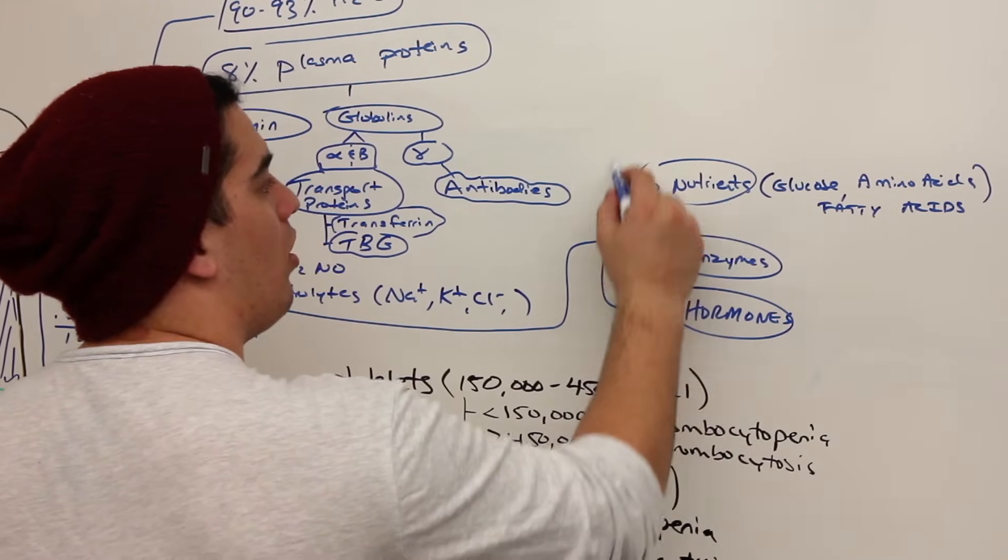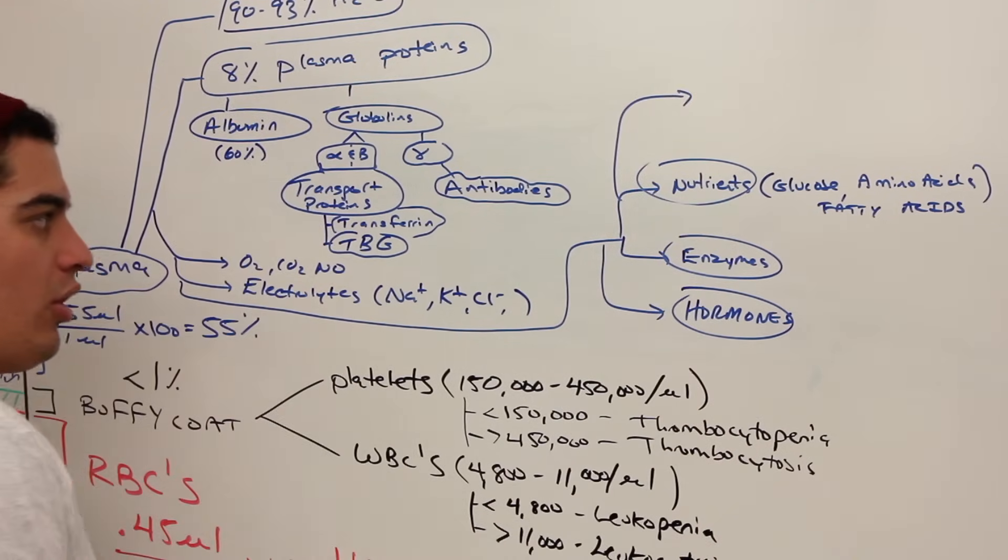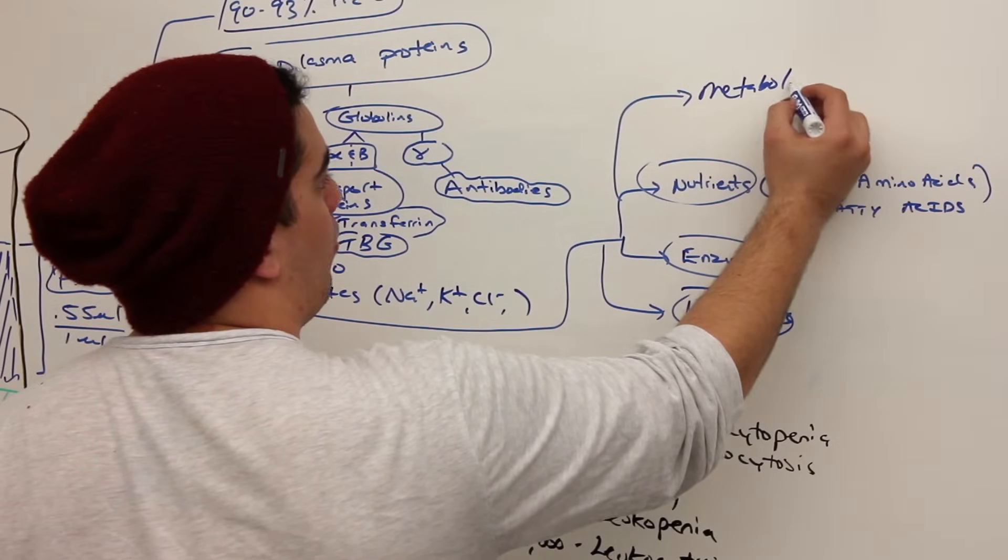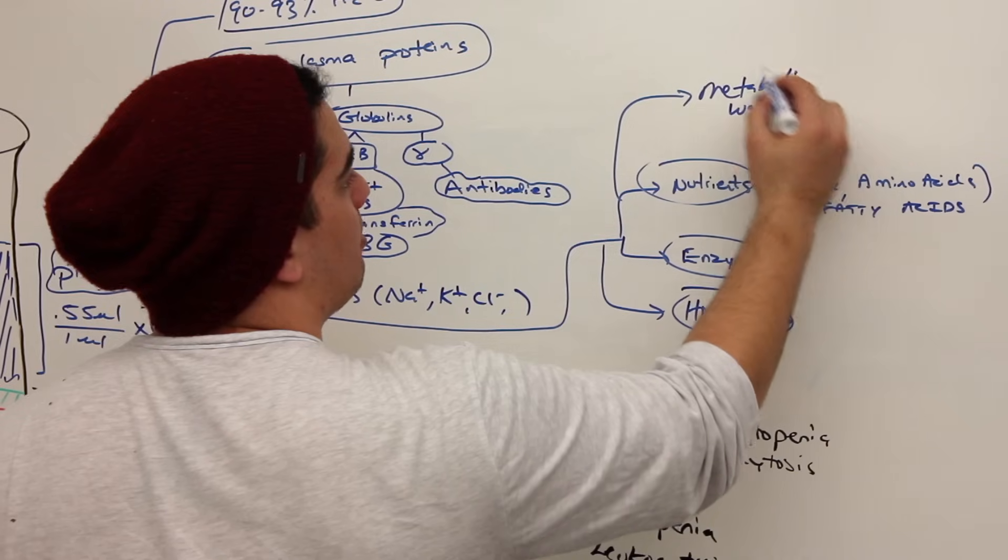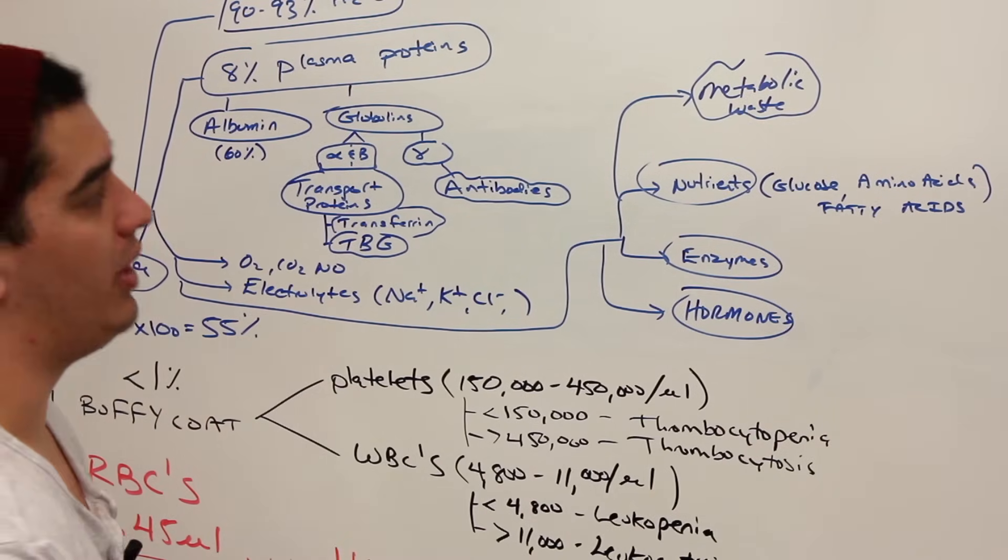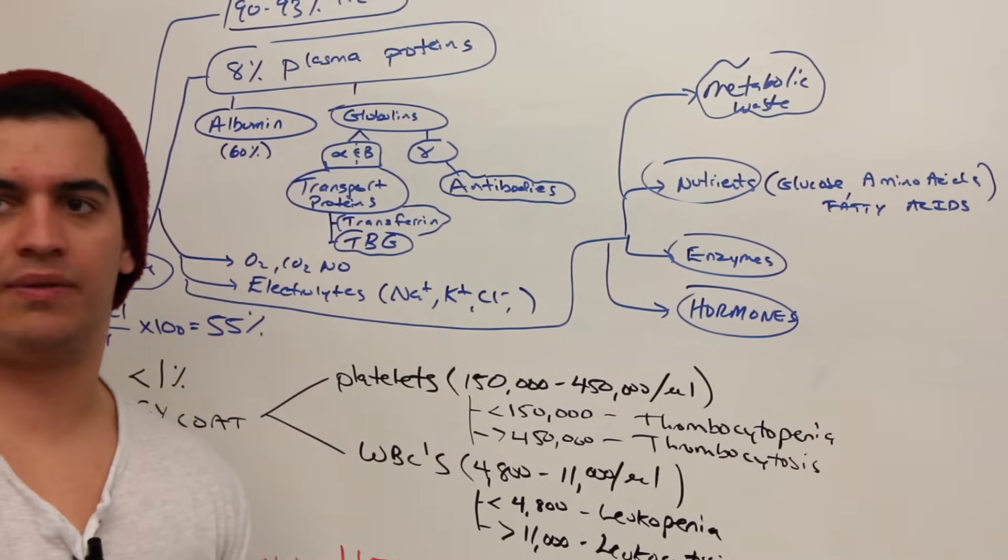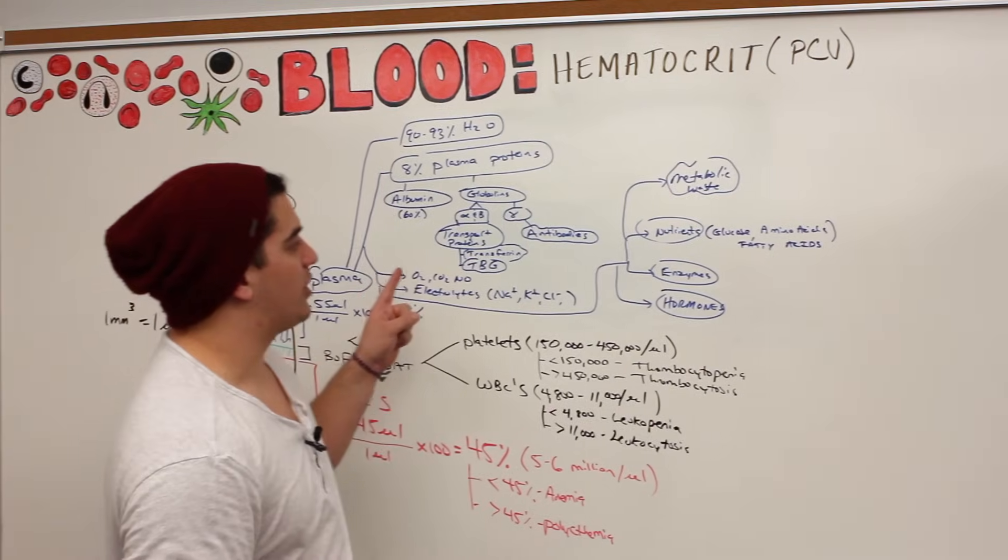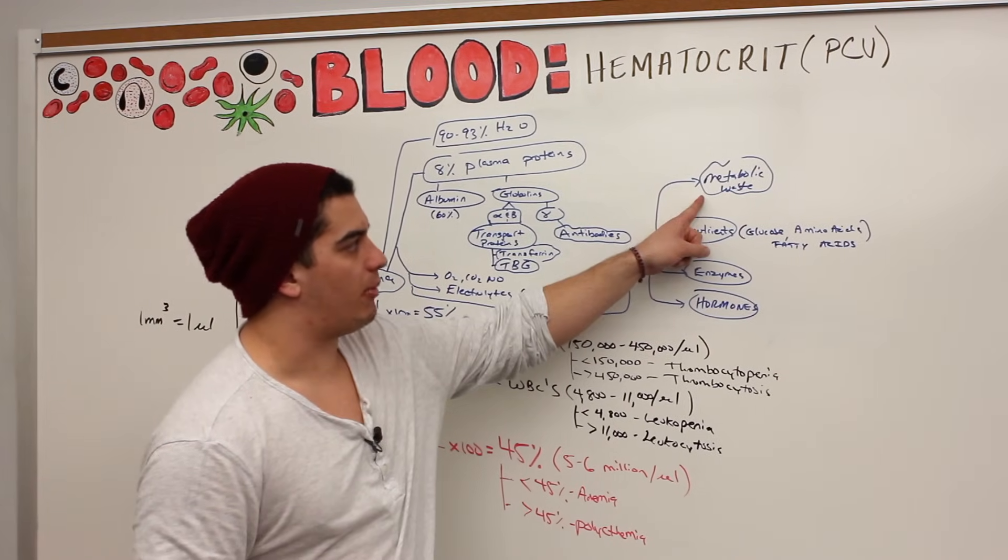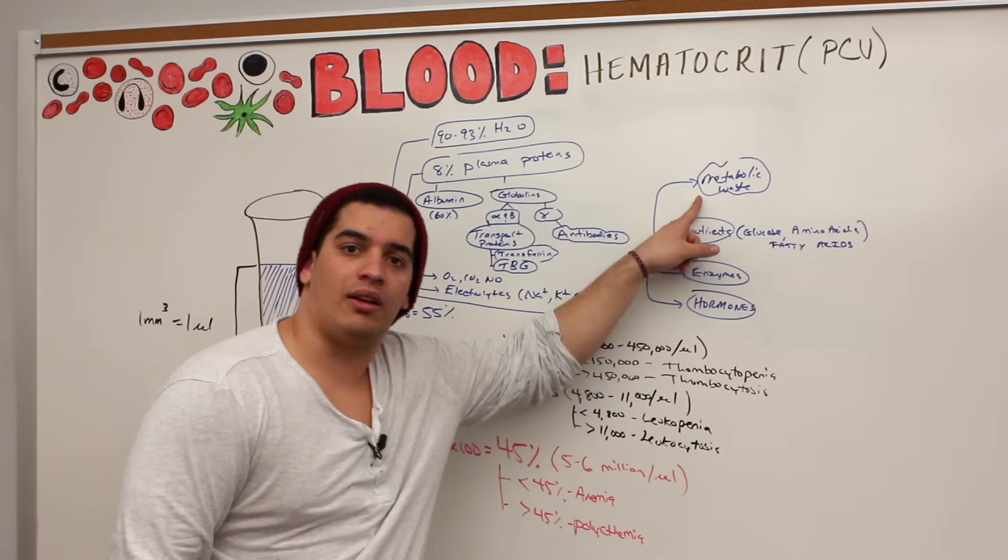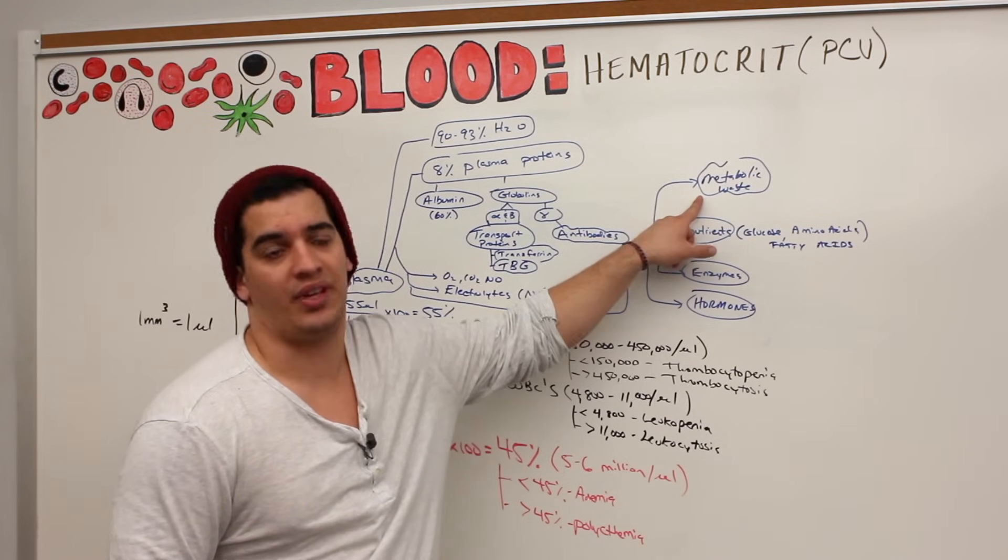And then one last thing to finish it all off, you can also have metabolic waste. So metabolic waste products. And what are these metabolic waste products? Could be lactic acid, could be uric acid, could be creatinine, could be all kinds of different substances. What is the purpose of this? Well, usually the plasma is responsible for being able to transport this metabolic waste to the kidney where it can be excreted, or it takes it to the liver because the liver can excrete it out through the feces.